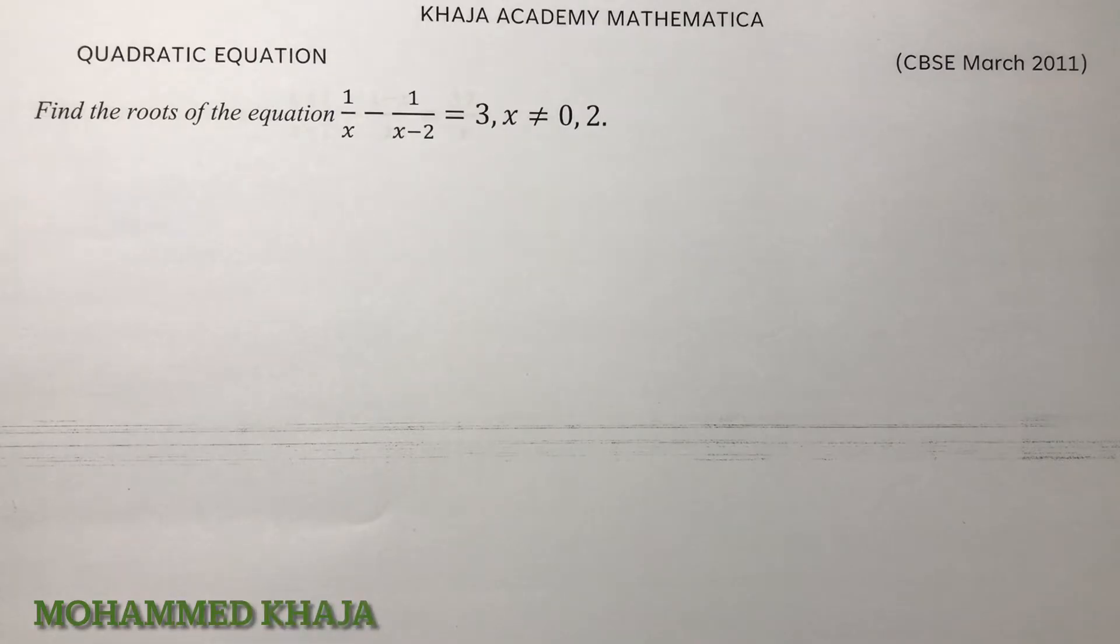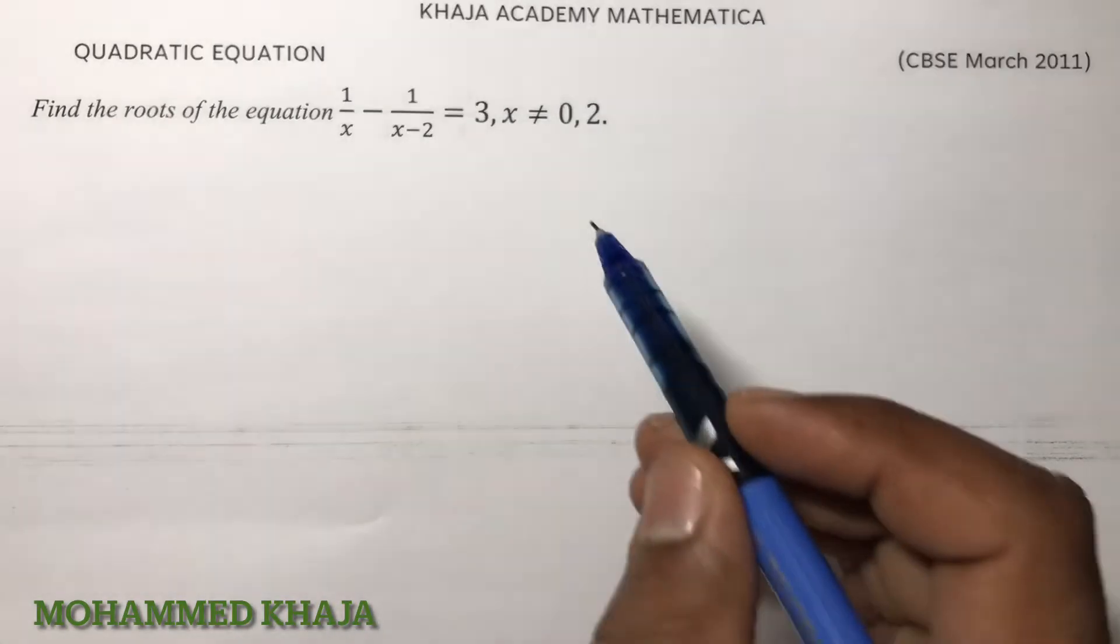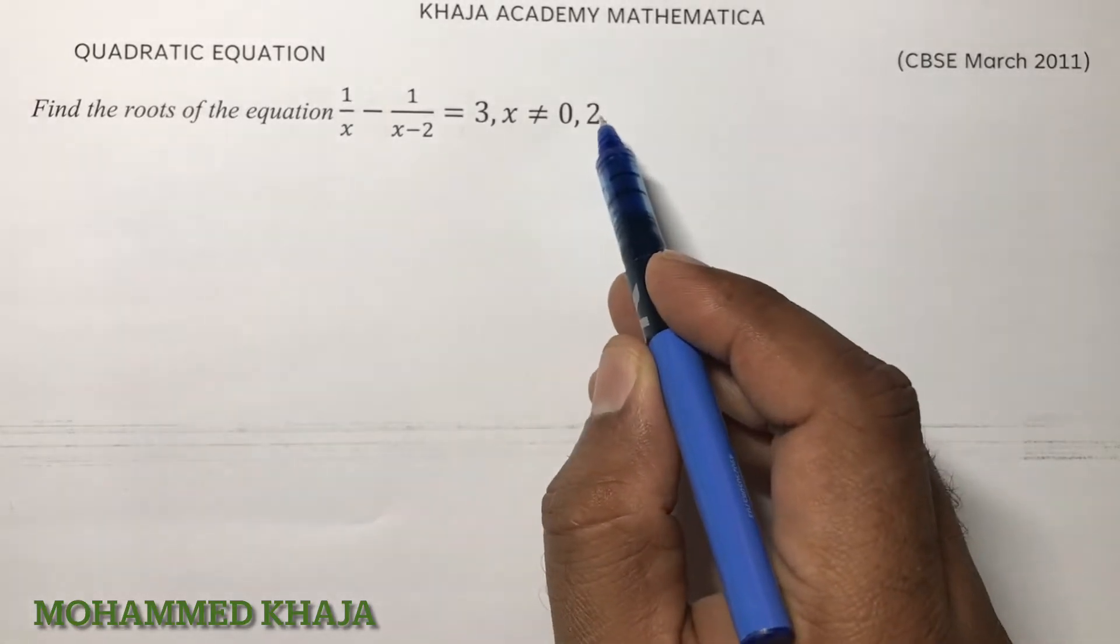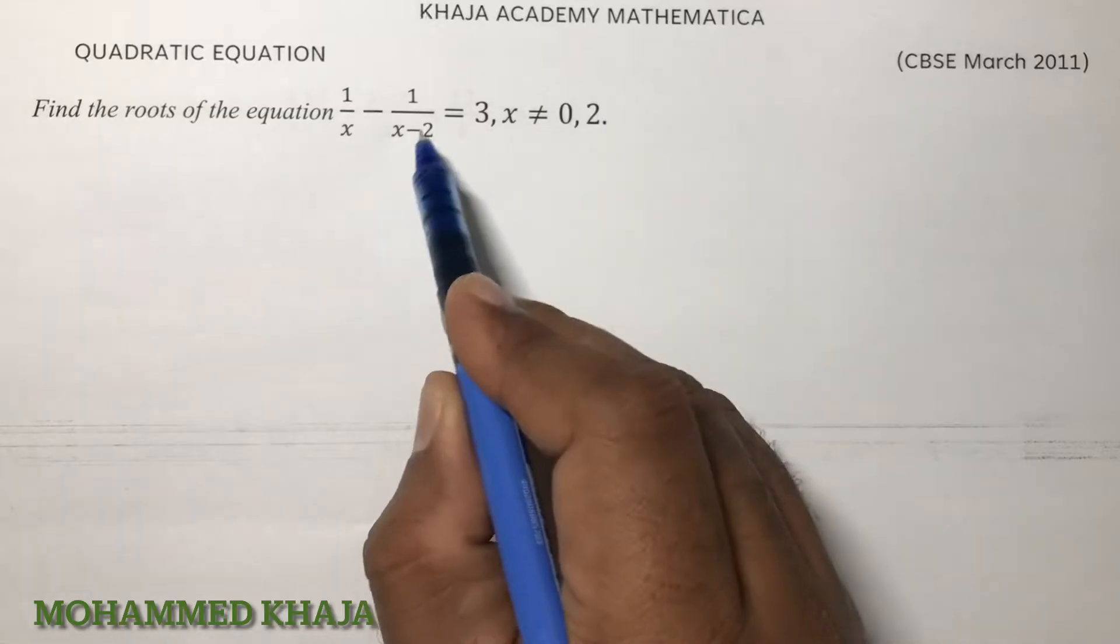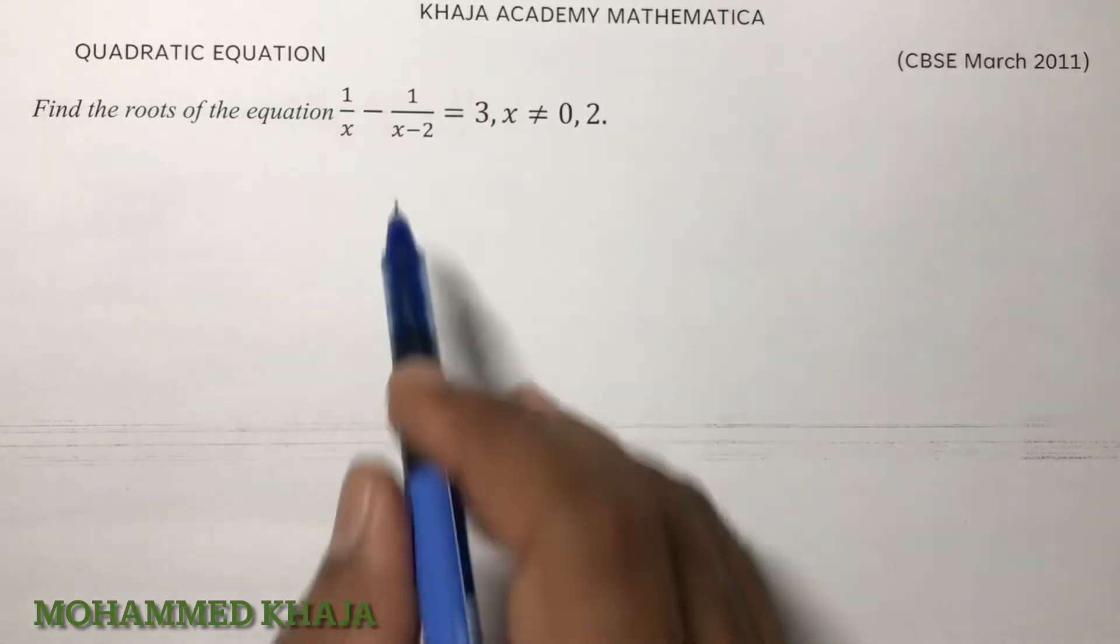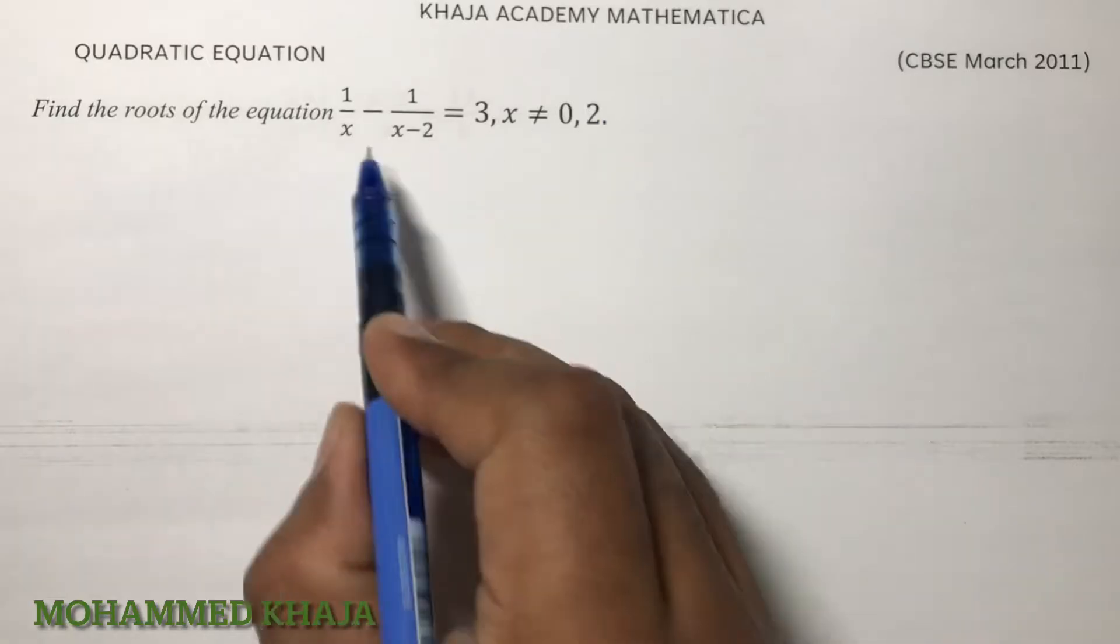Find the roots of the equation 1/x - 1/(x-2) = 3 where x is not equal to 0 and 2, because if x is 0 it will become undefined, if x is 2 this will become 1/(2-2) = 1/0 which is not defined, so that's why they give these values.